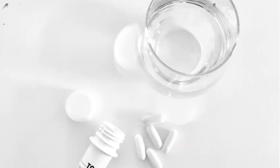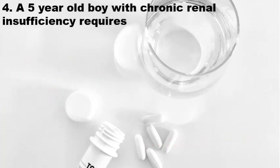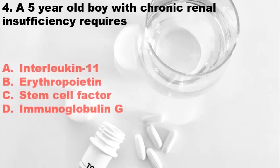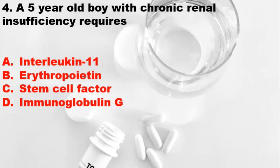Fourth question: A five-year-old boy with chronic renal insufficiency requires — Option A: Interleukin-11, Option B: Erythropoietin, Option C: Stem cell factor, Option D: Immunoglobulin G. The correct answer is Option B, Erythropoietin.